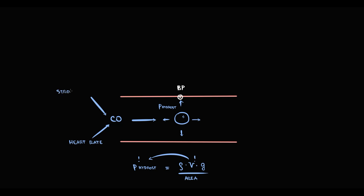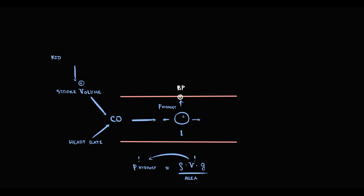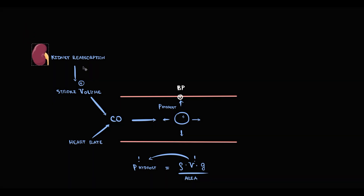Stroke volume is the volume of blood the heart pumps per contraction. The major factor that determines stroke volume is the total volume of fluid in general circulation. The major organ that regulates blood volume in general circulation is the kidneys, because kidneys provide reabsorption of fluid. So there are two major organs that determine blood pressure: the kidneys and the heart.